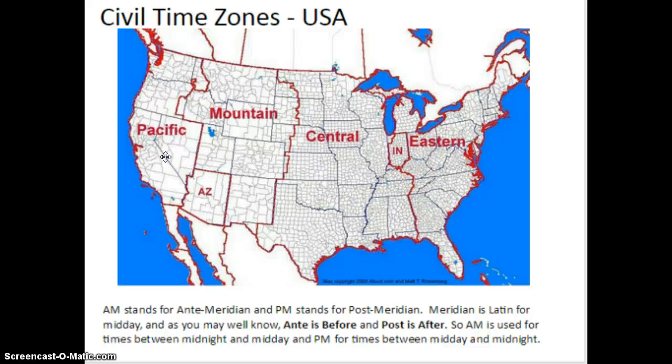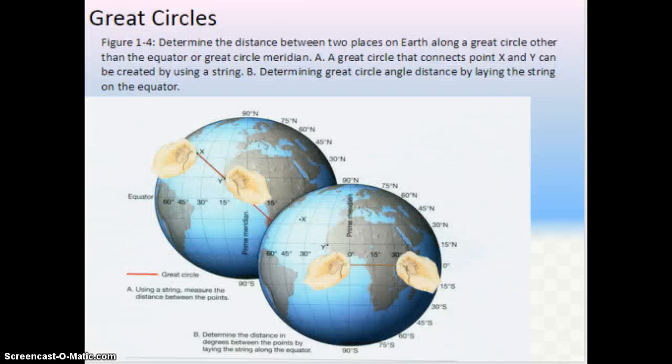AM stands for ante meridian, and PM stands for post meridian. Meridian is Latin for midday. So ante is before, and post is after. So AM is used for time between midnight and midday, and PM are times between midday and midnight.